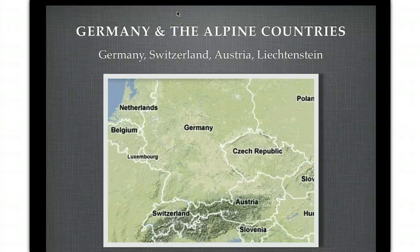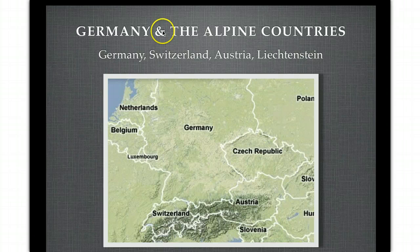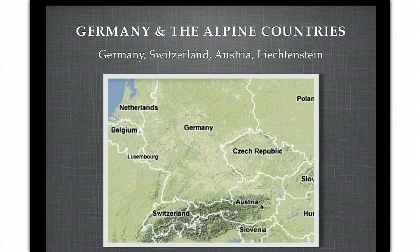We're looking at what is known as the Alpine countries and the nation of Germany. This includes Germany, Switzerland, Austria, and the nation of Liechtenstein. On your screen you can see Germany, Switzerland, and Austria, but you probably cannot see Liechtenstein because it is such a small nation that we would have to zoom in on the map.